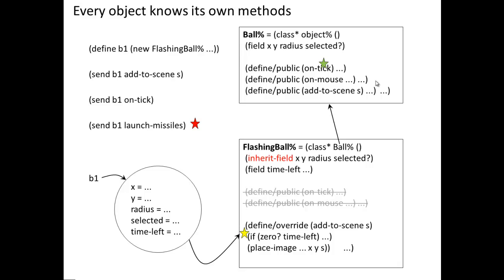If I send the FlashingBall—send B1 a launch-missiles message—what's going to happen?